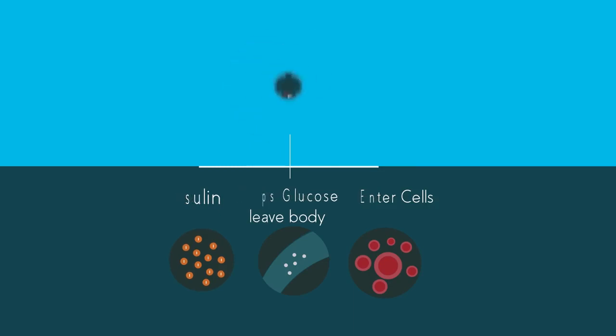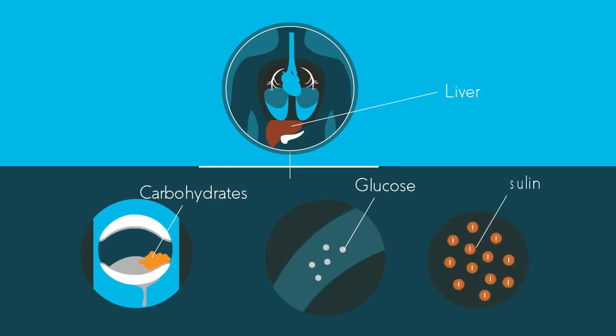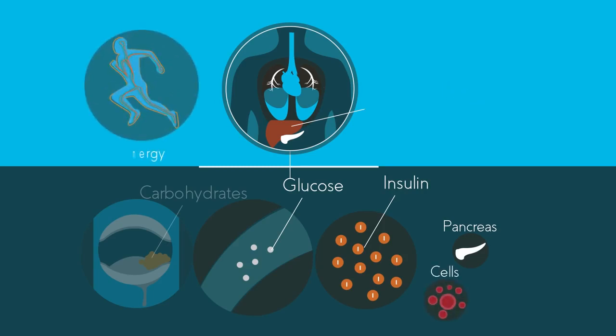Your body digests carbohydrates, breaking it down into glucose. Your liver also produces glucose. Insulin is a hormone produced by the pancreas that allows glucose to enter into our body's cells. Here it is used to provide energy to undergo our normal life processes, like growth and repair.